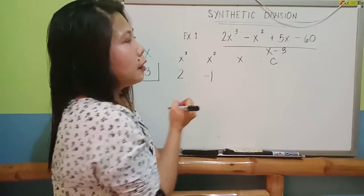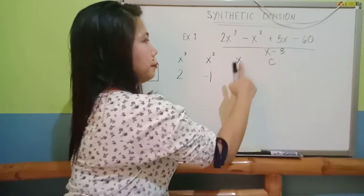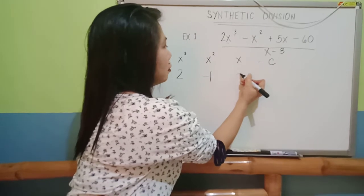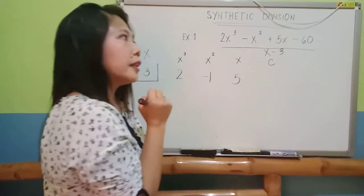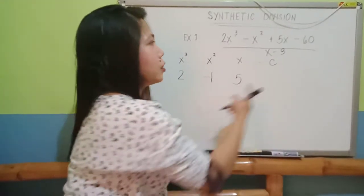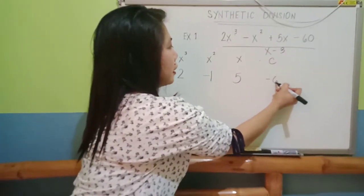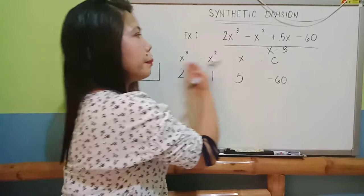And then, for your x, what is your coefficient? You have there a 5. So, you write down 5. And then, lastly, is your constant. Your constant is negative 60. So, that will be the pattern.